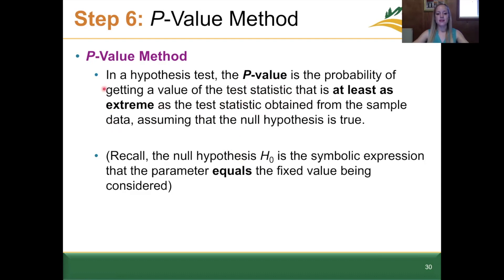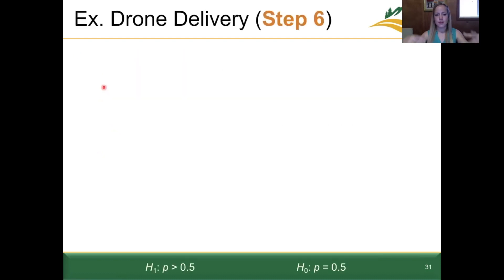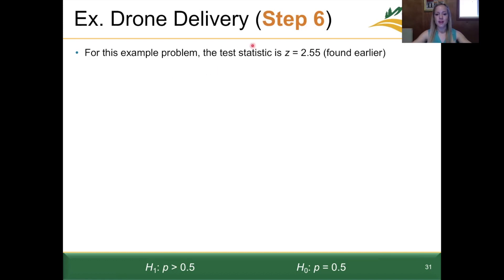This is a fairly dense definition, so let's practice doing this. We're getting more context on how to apply step six, specifically how to obtain that value for p. I'll talk you through how I find the p-value using Excel — I highly recommend you use Excel. For this example problem, we found the test statistic, the z-value, to be equal to 2.55, using the unrounded version of the proportion rather than 2.54.